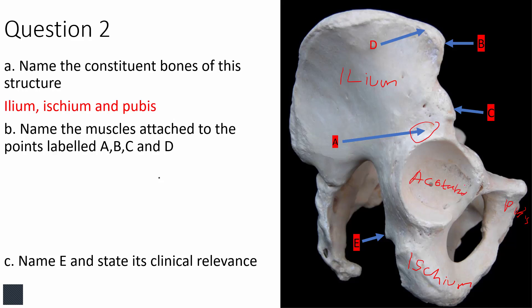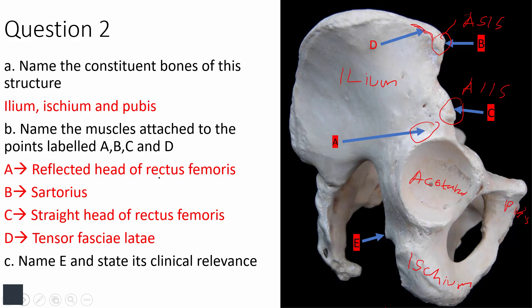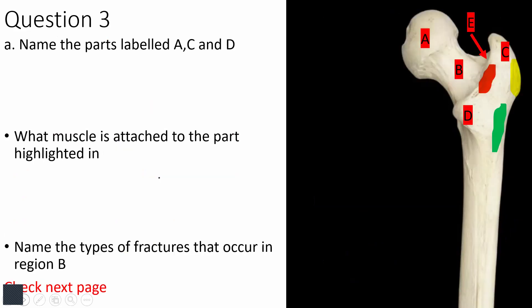Point A is the supra-acetabular fossa — above the acetabulum — and the reflected head of rectus femoris attaches there. B is the anterior superior iliac spine (ASIS), and sartorius attaches there. C is the anterior inferior iliac spine, and the straight head of rectus femoris attaches there. D is the outer lip of the iliac crest, where tensor fascia lata attaches. E is the ischial spine, the bony landmark used when performing a pudendal nerve block.